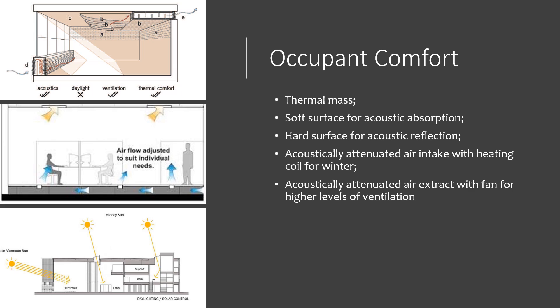Some additional strategies for occupant comfort include using materials to help with temperature and acoustics, such as using thermal mass to help reduce the temperature fluctuations throughout the course of the day. Thermal mass uses materials that can absorb heat during the day and release it slowly when the sun is not available for warmth. You can also use soft surfaces for acoustic absorption and hard surfaces for acoustic reflection, and add acoustically attenuated air intakes with heating coils for the winter, and acoustically attenuated air extract fans for higher levels of ventilation.